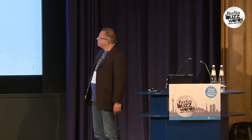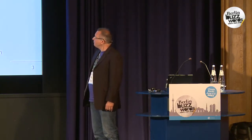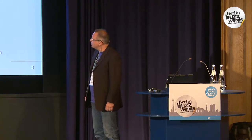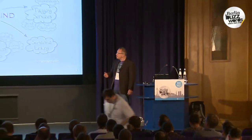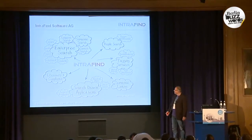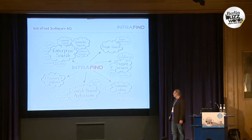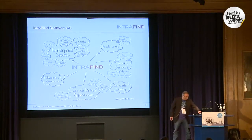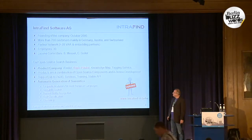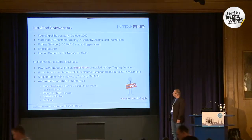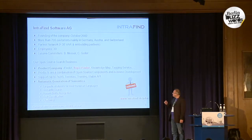A few words about IntraFind. We are experts for enterprise search and search-driven applications. Besides search, we offer text analytics components like morphology, named entity recognition, classification, and clustering. So besides search, we do tagging, semantic linking, and stuff like that. We have about 30 employees, we're based in Munich, most of our customers are in German-speaking countries, and we are a product company. Our products are a combination of open-source components like Lucene and in-house development.